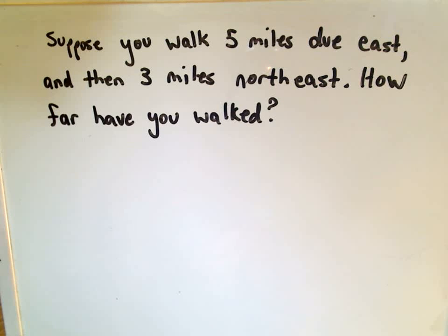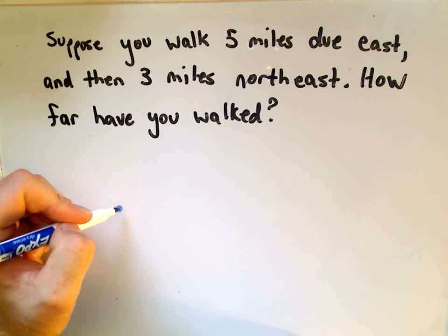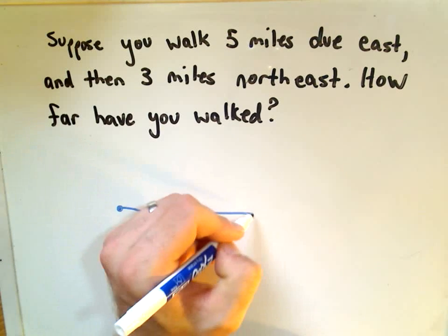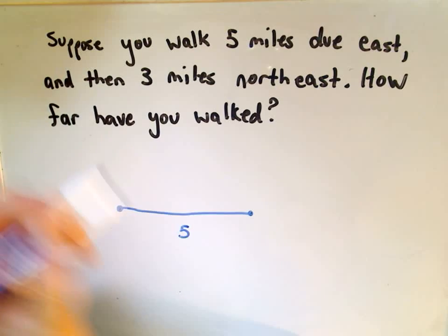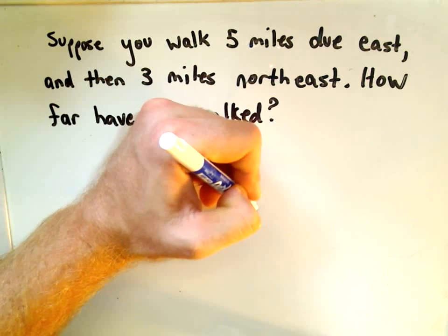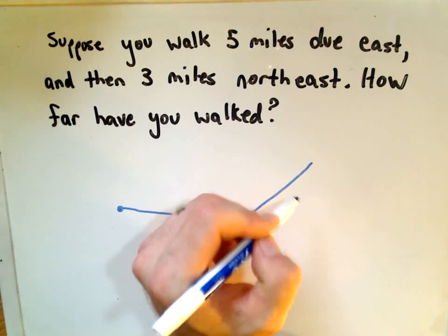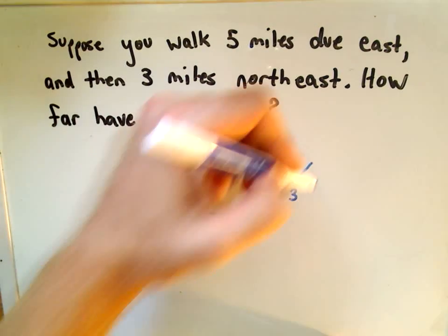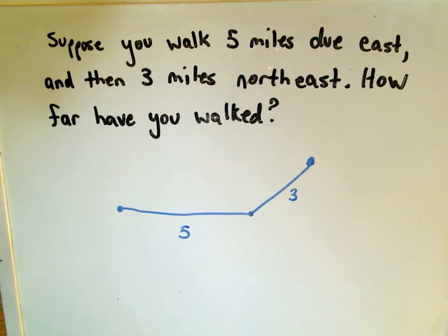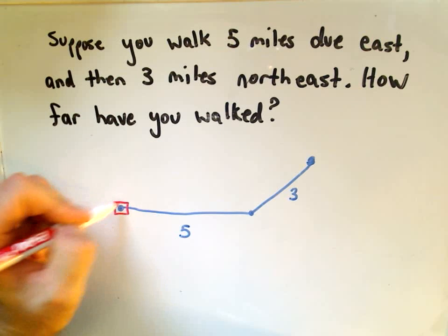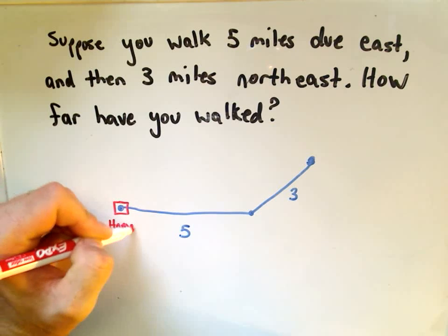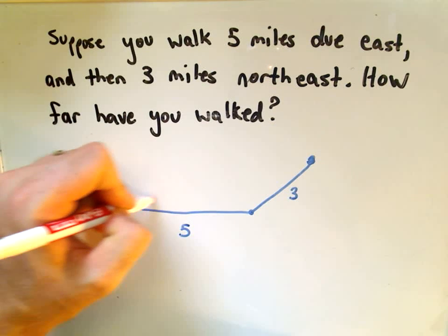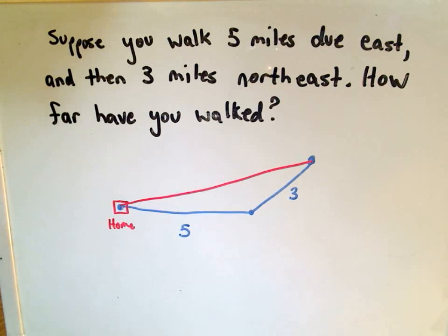Let's draw a little picture. You walk 5 miles due east, and then you walk northeast 3 miles. This part will have length 3, and we want to know how far you are away from home. If you started here at home, we want to know if you were going to walk in a straight line, how far would you have to go to get back home?